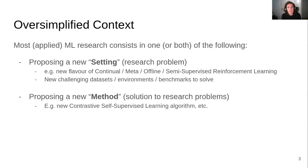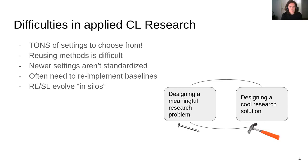Here's an oversimplification of the context. Most applied machine learning research does either or both of the following: it proposes a new setting or a new research problem for the community to tackle, or it proposes a new method or a new solution to such problems. When you're doing either of these things, you'll encounter problems that stem from the fact that there are a ton of settings to choose from in continual learning. Because you have to choose a setting when you're developing a new method, it's often going to be specialized towards that setting and difficult to reuse.